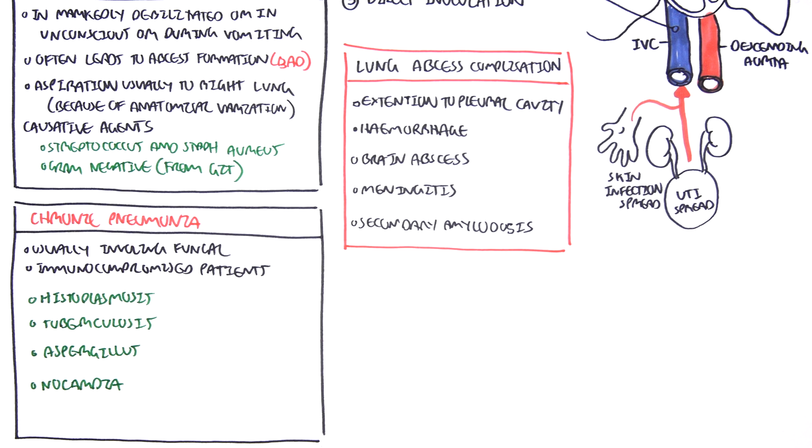Okay, so those are the four types we looked at: Community acquired, nosocomial, aspiration, and chronic pneumonia.